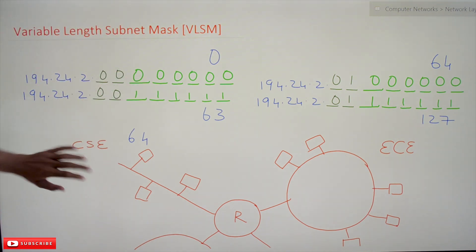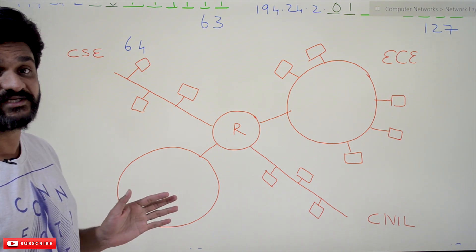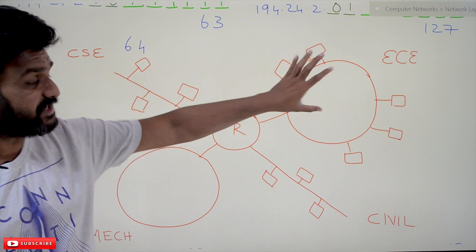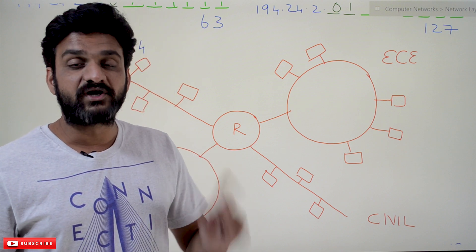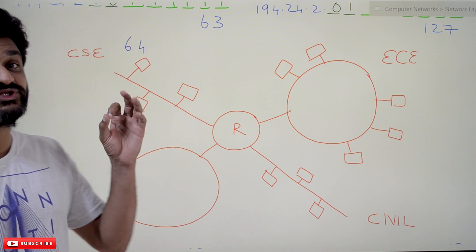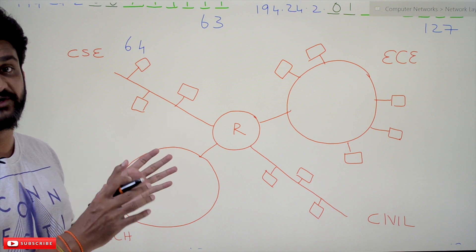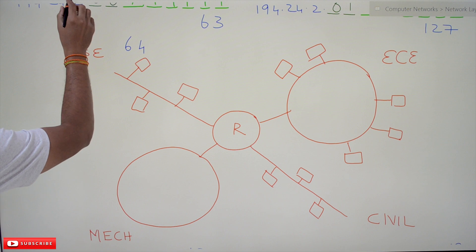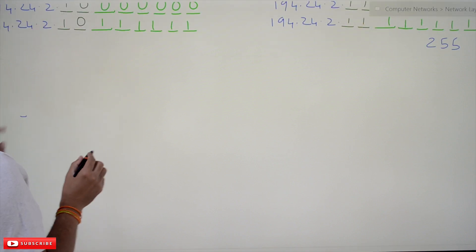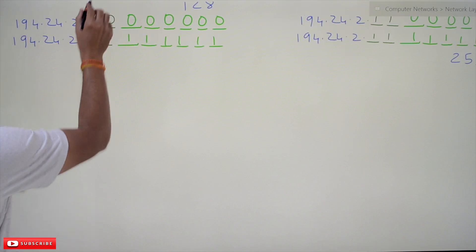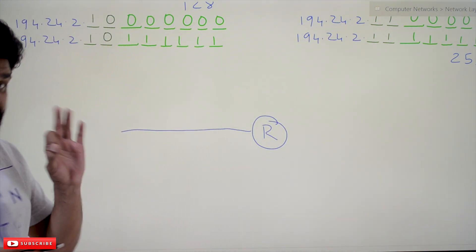So let's try to understand what is variable length subnet mask. In our previous classes we divided a network of 256 systems into four subnets, each subnet consisting of 64 systems — each subnet having an equal number of systems. What if we want to divide this network into three sub-networks? What if we want a variable number of systems in a sub-network? Let's take the same IP addresses and discuss how the division is going to work.